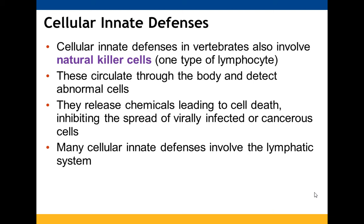Natural killer cells are one type of lymphocyte. They move throughout the body and, when they recognize abnormal cells, can release chemicals causing apoptosis — cell death. This can result in virus-infected cells or cancer cells dying off. They play a role in both innate and adaptive immunity.